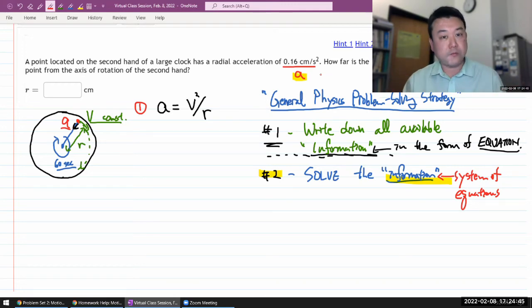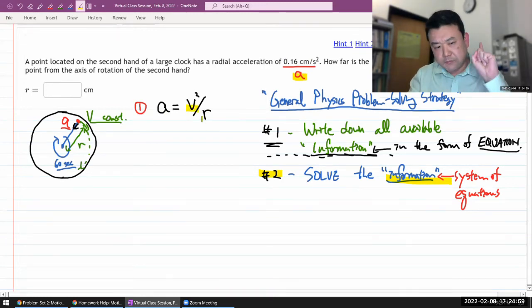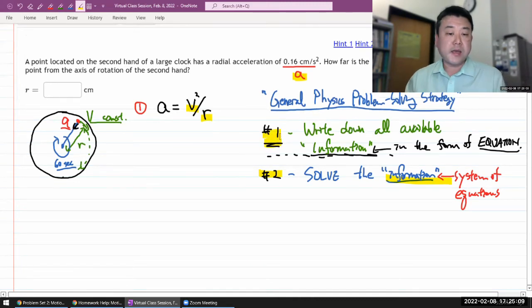So in my system of one equation, I count my unknowns to see if I have enough equations. Acceleration, that's known. Speed, I don't know that, so one unknown. Radius, I'm looking for it, so two unknowns. So I have one equation and two unknowns, and that's what's telling me that I'm still not done with step number one. I need to look for more equations, more relationships between quantities.